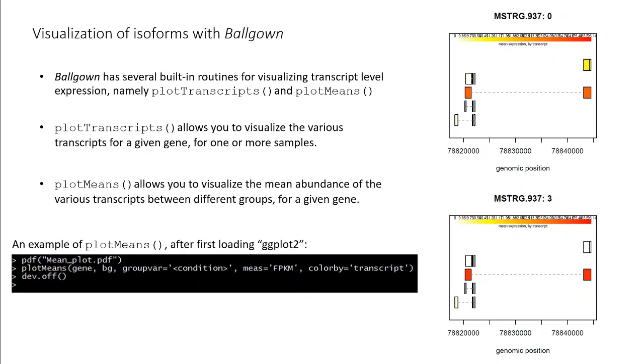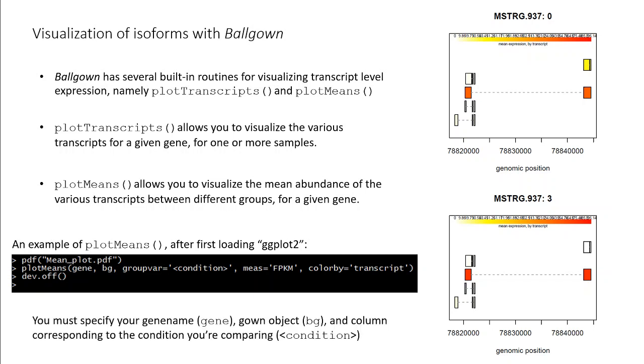Here we see an example of plotMeans, after having first loaded the ggplot2 library. In calling plotMeans, you must specify your gene name, gown object, and column name corresponding to the conditions you're comparing.